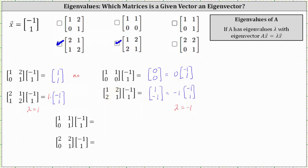For the next product, the first entry is 1 times negative 1 plus 1 times 1, which is 0. And the second entry is 0 times negative 1 plus 1 times 1, which is 1. The vector (0, 1) is not a scalar multiple of the vector (-1, 1), and therefore the vector (-1, 1) is not an eigenvector for this matrix.